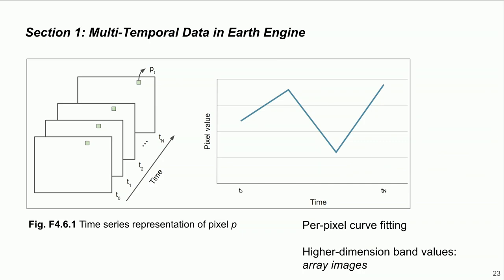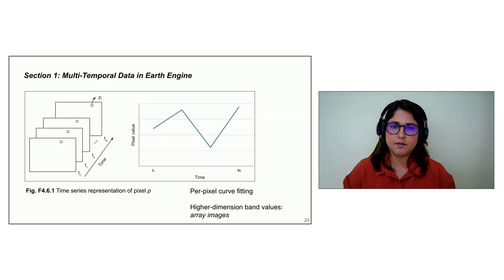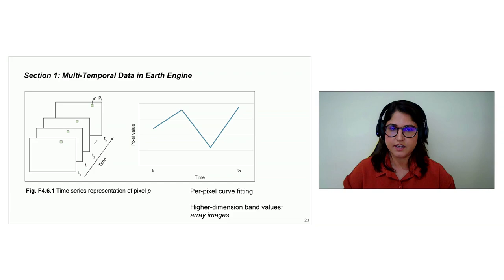Section one addresses multi-temporal data in Earth Engine: how each pixel may have a distinct number of observations for a given set of dates, and how data may be missing due to cloud masking. It also introduces per-pixel fitting using a simple linear function y = mx + b, and the concept of array images — a higher-order image structure in Earth Engine that's important throughout the chapter and introduced here at the beginning.